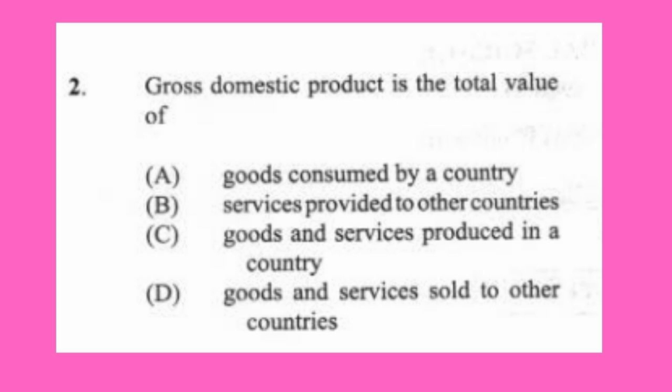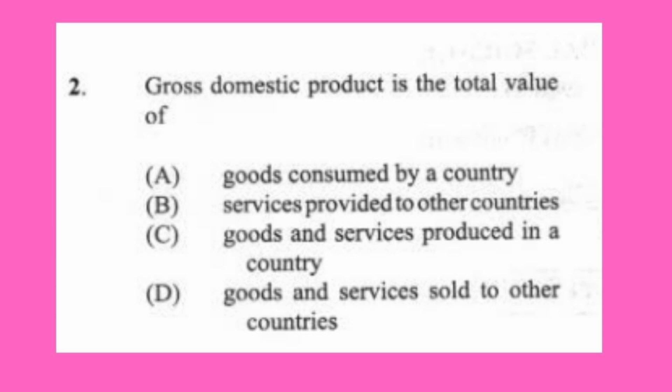Question 2: Gross domestic product is the total value of (a) goods consumed by a country, (b) services provided to other countries, (c) goods and services produced in a country, (d) goods and services sold to other countries. The answer is C. The main difference between GDP and GNP is that GDP speaks about production within a country, while GNP speaks about production within a country plus foreign exchange earnings.